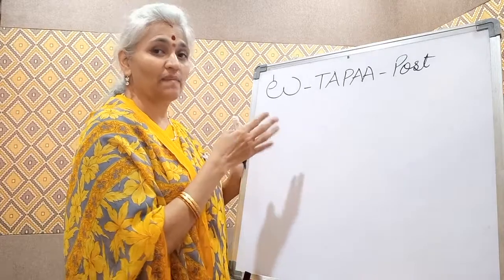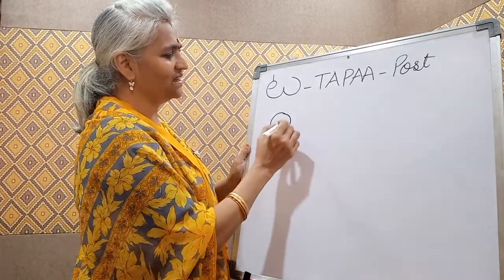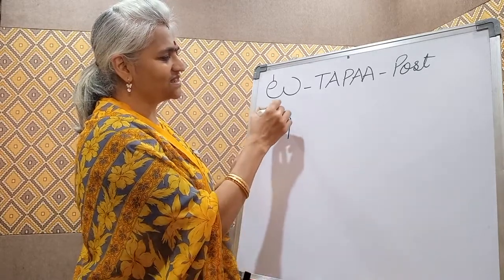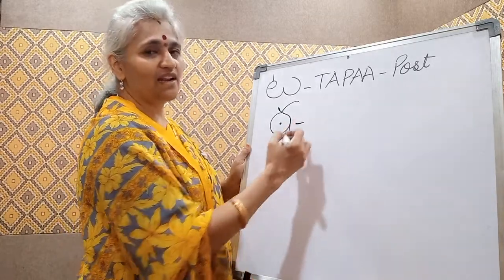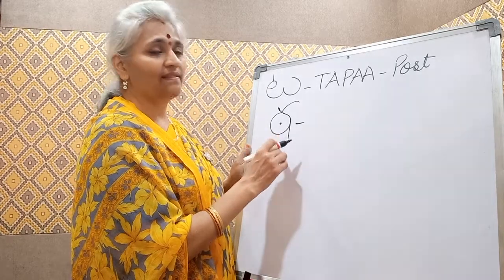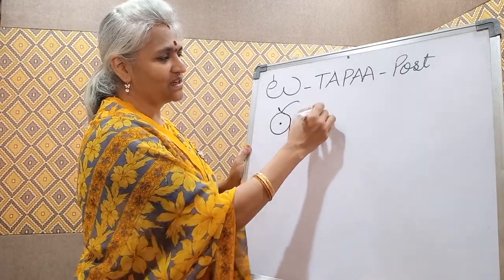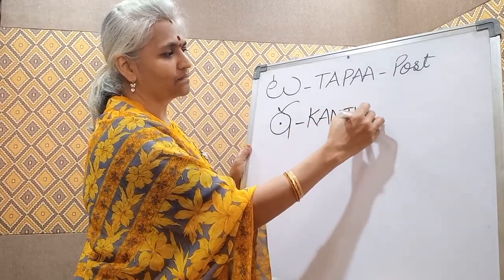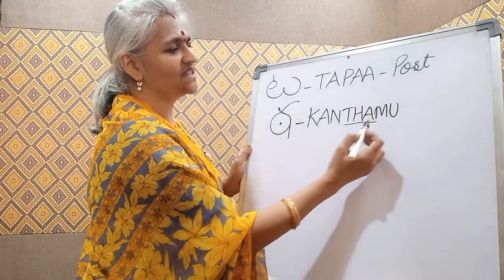The next one is the Mahapranam, THA. To write it, draw a circle and a standing line, a dot in the center, and a tick on top. There are no words starting with THA. There is a word KANTHAMU — the THA is found within that word.